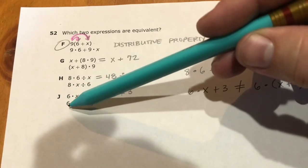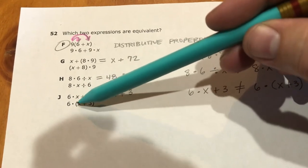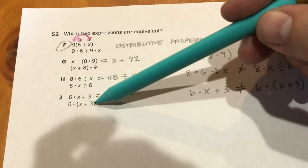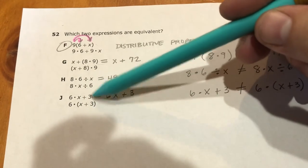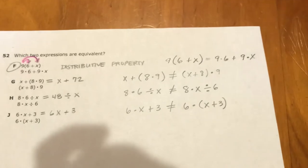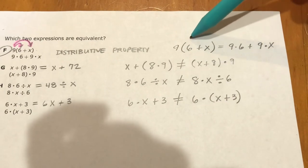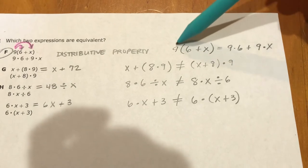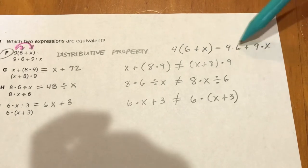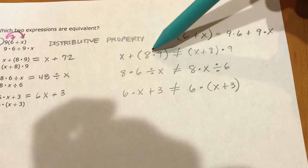I wrote it over here so you can kind of see how once I use the distributive property, 9 times 6, 9 times x, and I'm still adding, so that works. And the rest of these are just not the same.